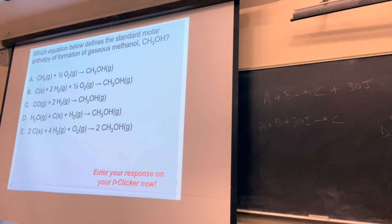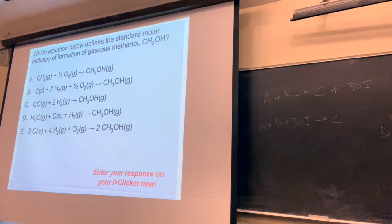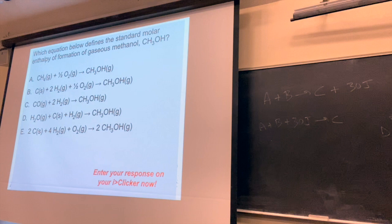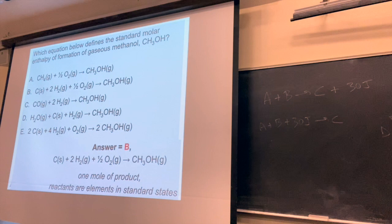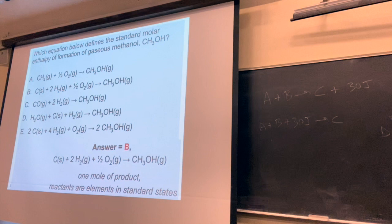Even though I dislike fractions, I have to use them here because you can only have one mole of product. The value you look up for methanol is per mole of methanol — not per two moles. So you will end up using fractions when it comes to heats of formation. A student asks about the diatomics H2 and O2 — those seven diatomics from 'Have No Fear Of Ice Cold Beer' are the ones that normally lead to fractions. Other elements like helium and argon are gases but are monatomic.